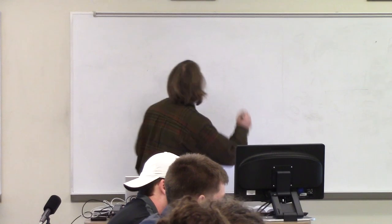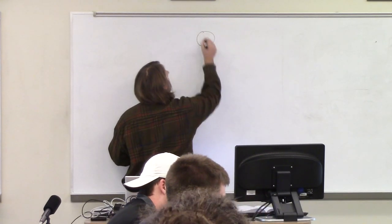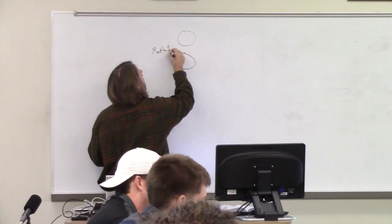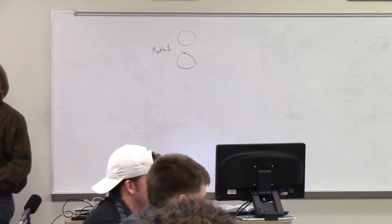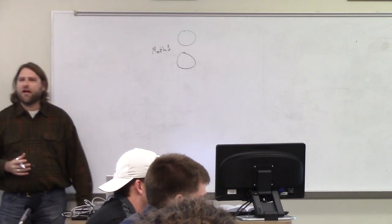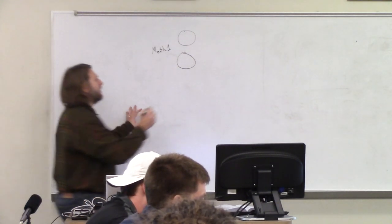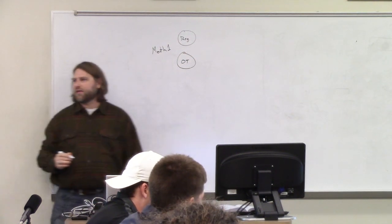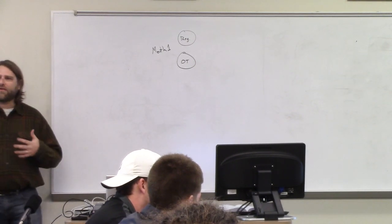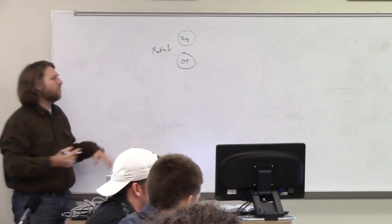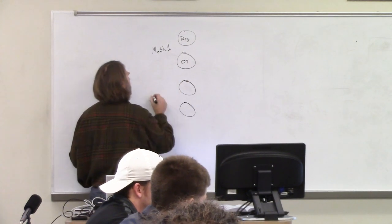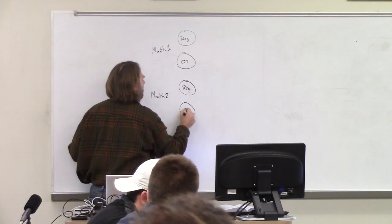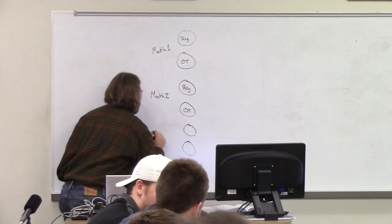We have two different nodes that will represent our first month production. This would be the regular, and this would be the overtime, because the costs for each are different, so we have to have different arcs for each one of them. And the same thing is true for month two — we have our regular and our overtime — and then month three.